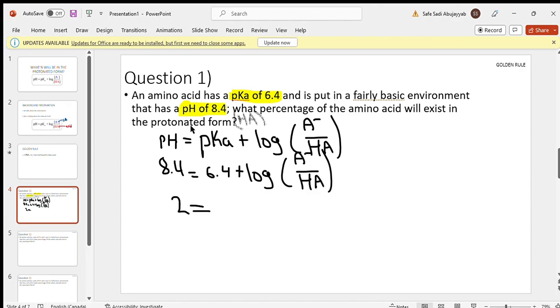2 equals the log of this. And how do we get rid of log? We're just going to put it to the power of 10, so 10 to the power of 2 equals products over reactants.